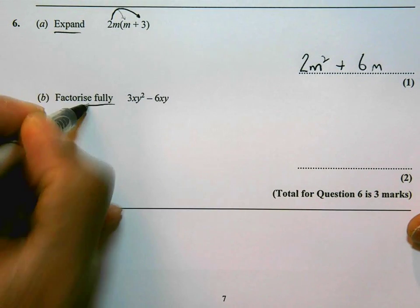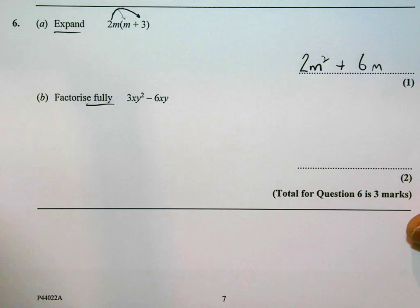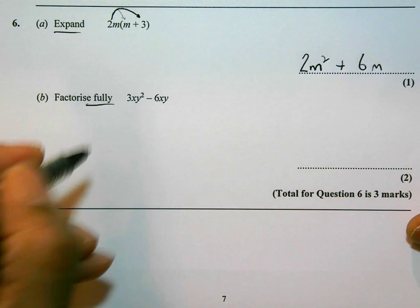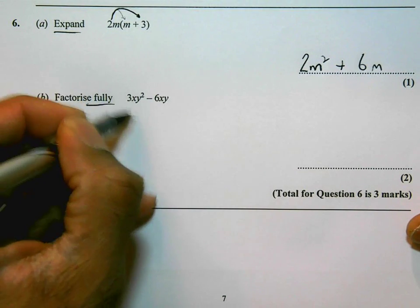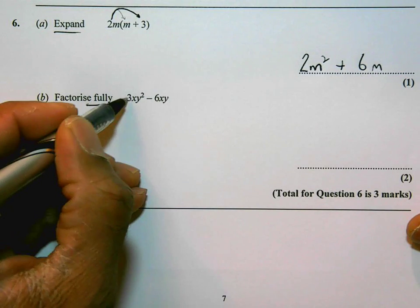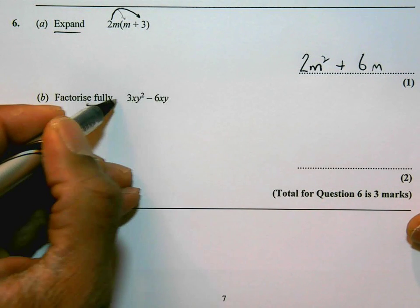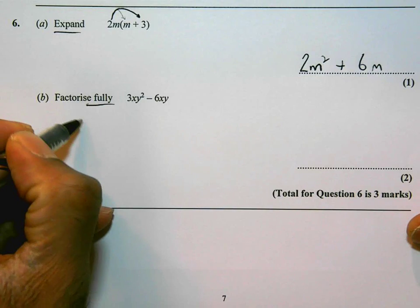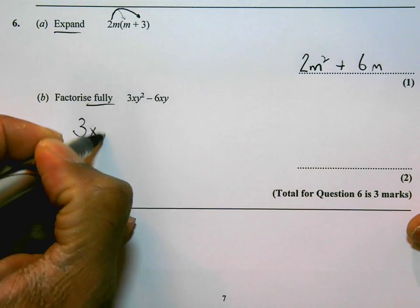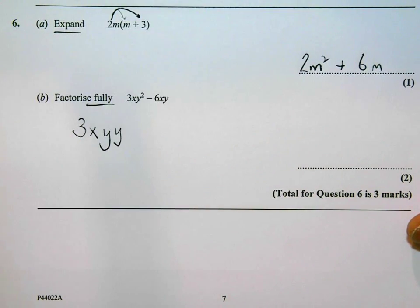Part B says fully factorize. So I need to make sure I take everything that's common from both of them out, both letters and numbers. I'm going to simplify the writing of this. So 3xy squared is the same as 3xyy.